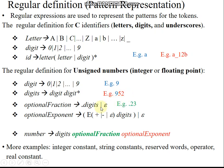Then we have an optional fraction to represent the decimal point. After the decimal point there may be any number of digits, using the digits production. There might also be epsilon, meaning nothing is there. For example, a decimal point followed by digits 2 and 3: digit is 2, then one additional digit 3.